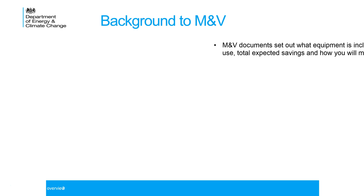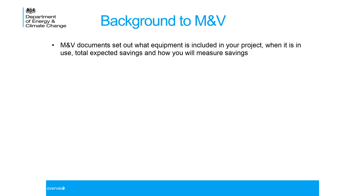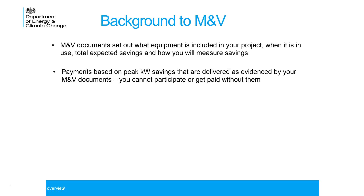Just a bit of background to MMV, or measurement and verification. Your measurement and verification documents set out what is in your project and you use them to calculate your total expected savings and indicate how you will measure and verify those savings. The payments in the pilot are based on the peak kilowatt savings that your project delivers, as evidenced by your measurement and verification documents, so you can't participate or get paid without them — they're an indispensable part of the process.